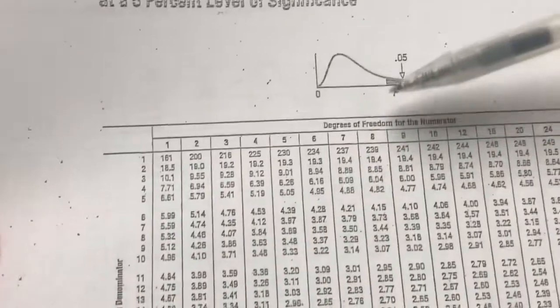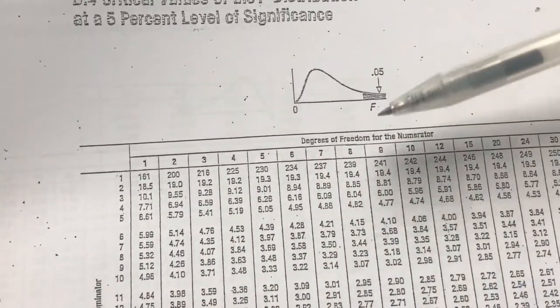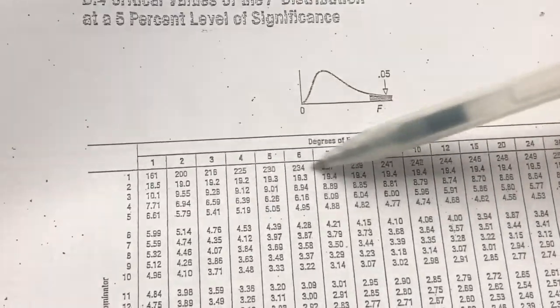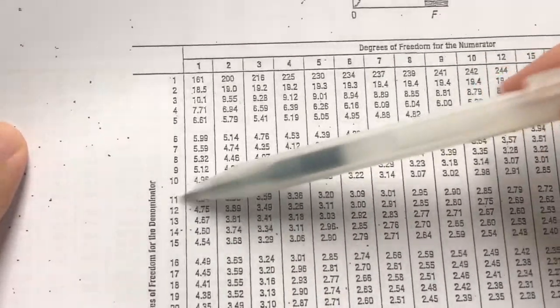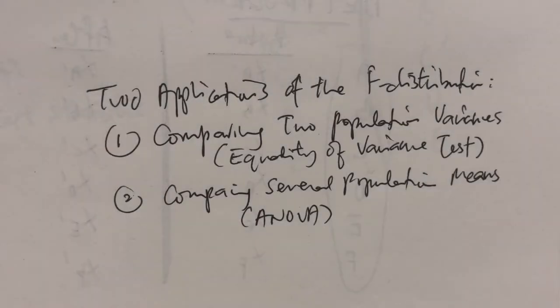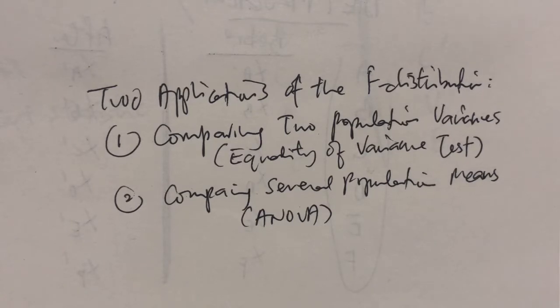So do you remember how to calculate degrees of freedom, right? It's sample size minus 1, so n minus 1. So we will see here, and we'll also calculate 1 here, and then we will find where they both match. So we've already seen how the F-distribution looks like. Later on, when we look at some examples, I'll show you how to read the table.